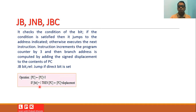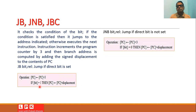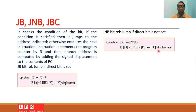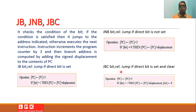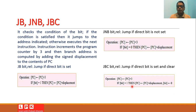Another form is JNB bit, relative — jump if the direct bit is not set. The program counter is incremented by 3, and if the bit value is zero the relative address is computed and added to the PC. Another form is JBC bit, relative — jump if the direct bit is set and clear it. The PC is incremented by 3, and if the bit is one the displacement is added to the PC and the bit is cleared to zero.